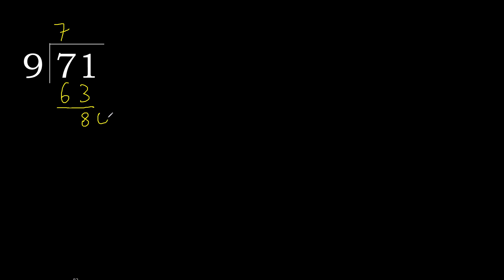Always complete with 0, here with a decimal point. 80. 9 multiplied by 9 is greater. Multiply by 8: 72, which is not greater. Subtract 8.